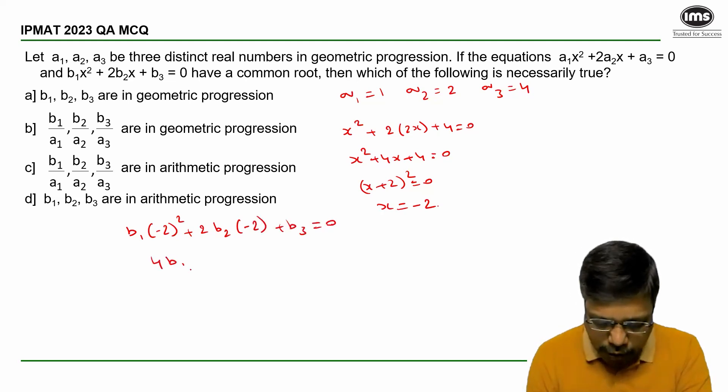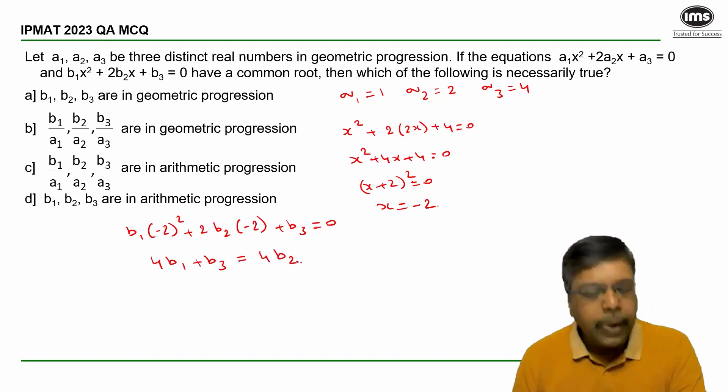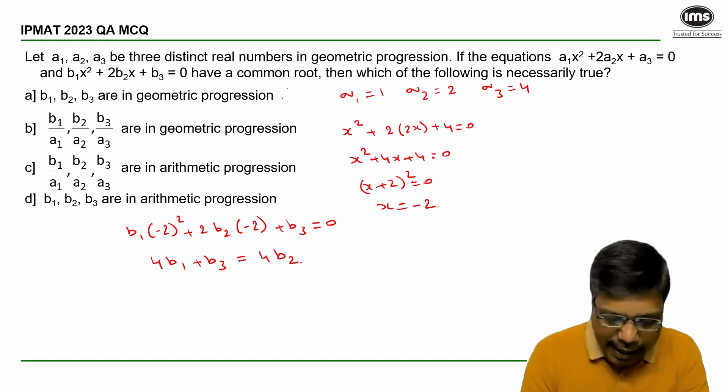So I can write this as 4B1 + B3 = 4B2. Now when I look at B1, B2, B3 as they are, they are neither in arithmetic progression nor in geometric progression. So clearly I can eliminate options A and D.